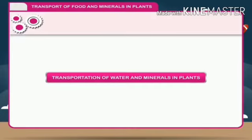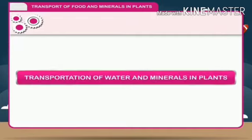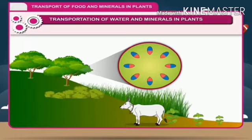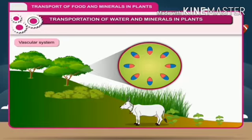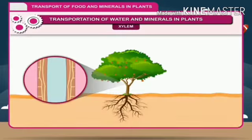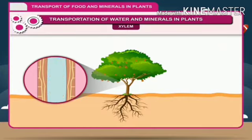Transportation of water and minerals in plants. Like animals, plants also have a mechanism for transportation of mineral solution. This takes place through a system called the vascular system. In plants, the vascular system consists of two types of conducting tissues. Xylem consists of mainly thick and tubular cells forming a pipe-like structure. It conducts water and minerals from the ground to the stems and leaves.